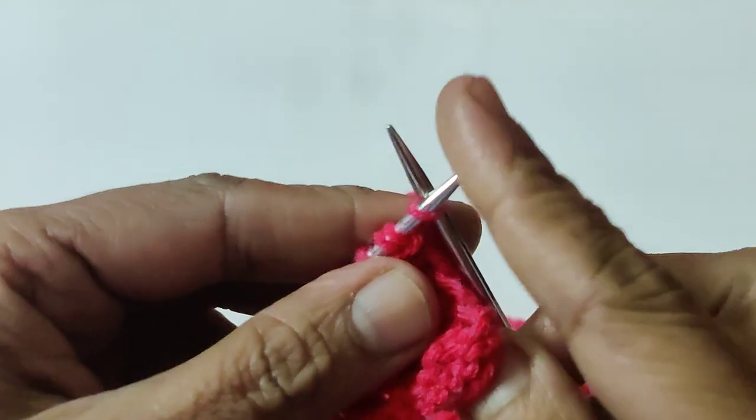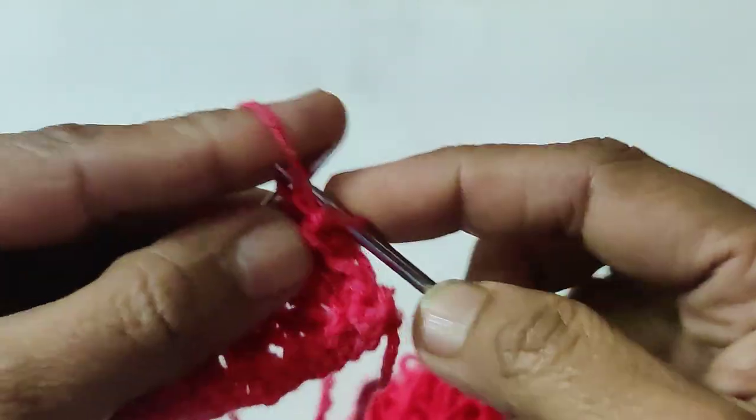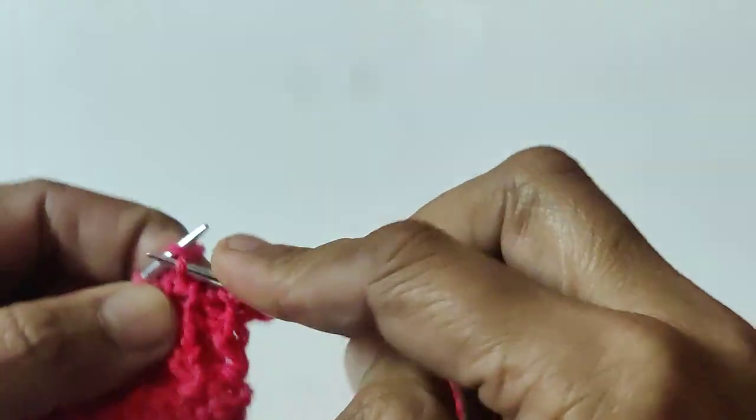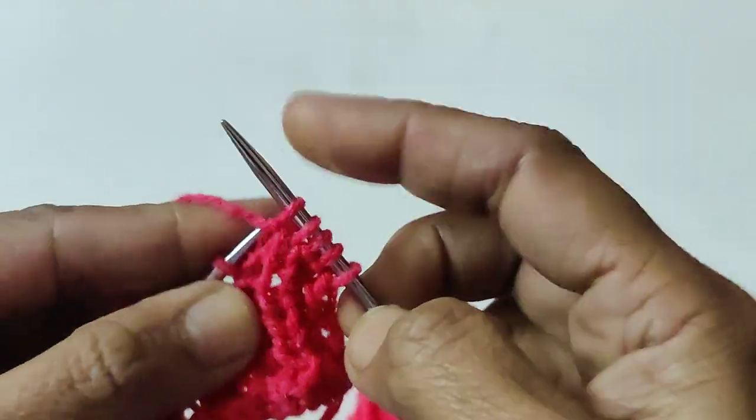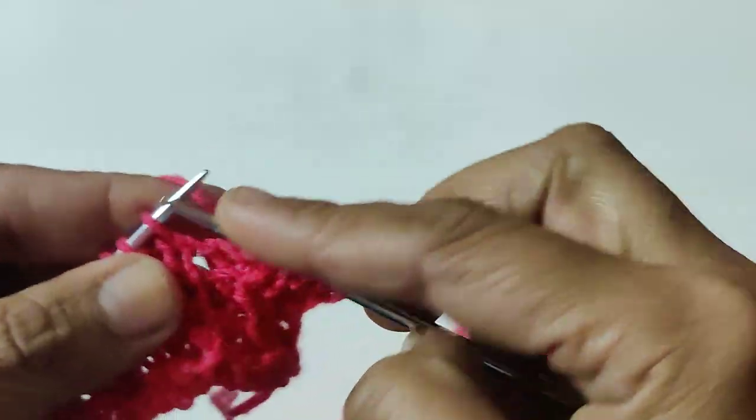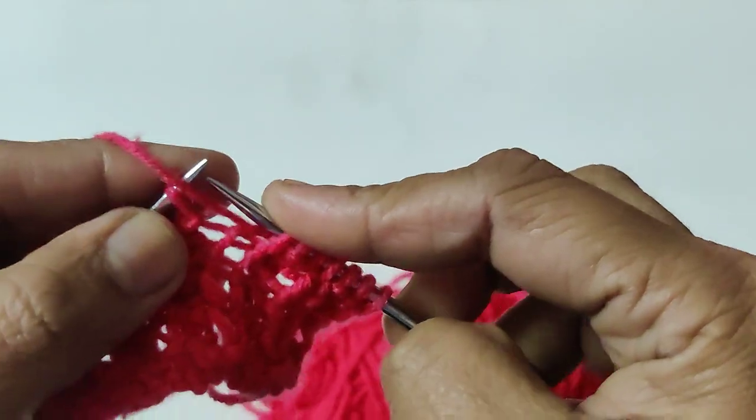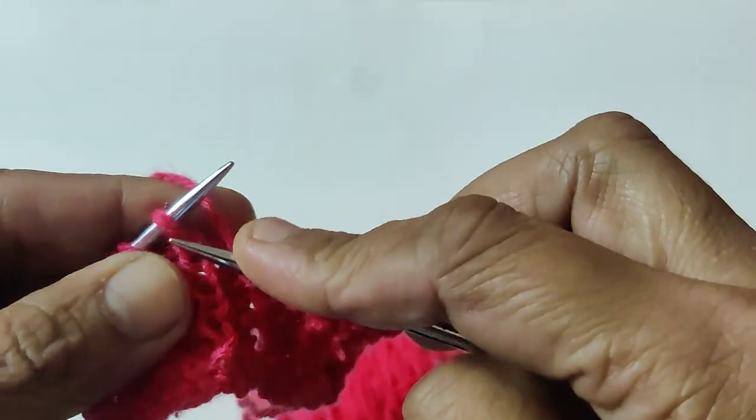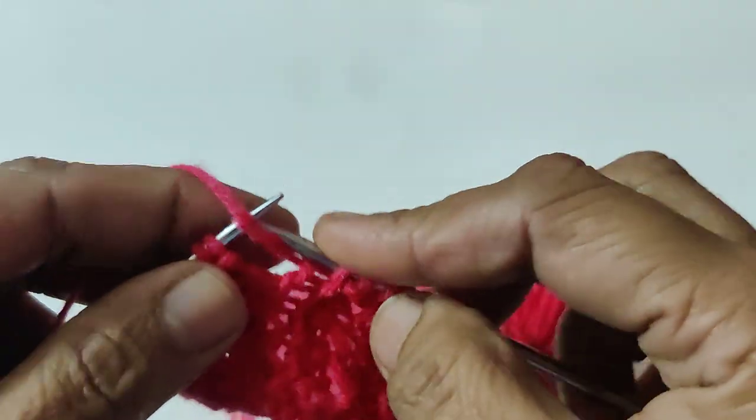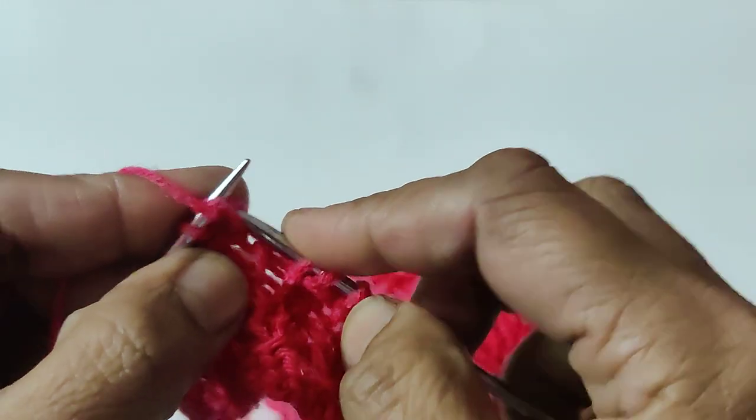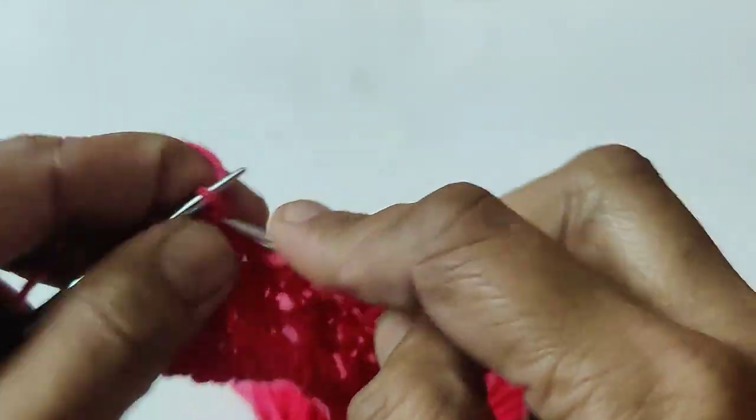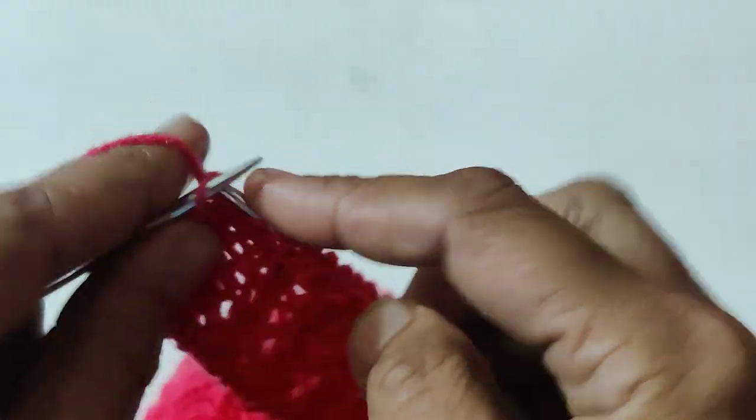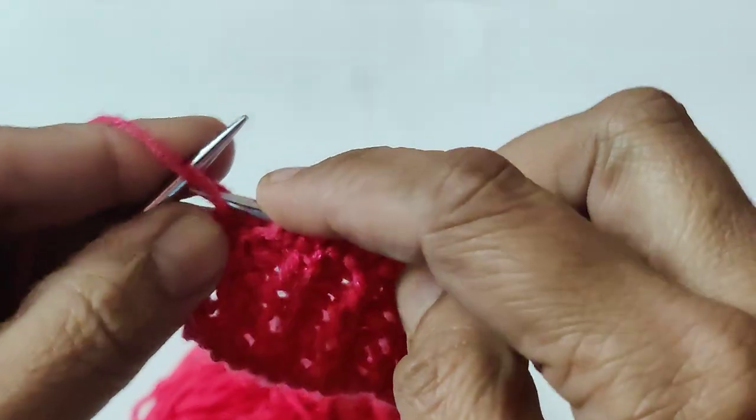Continue with two stitches, one, two, then one stitch straight, two back, one back, two back, completing the edge.